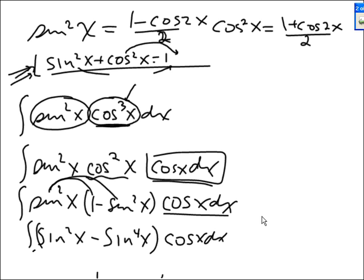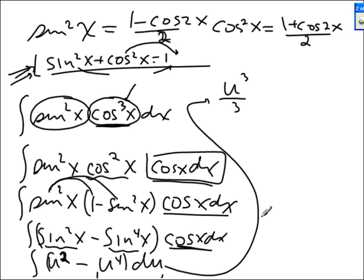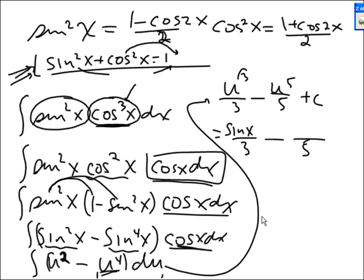That cosine x dx is our du. If that's du, then u must be sine x. We have sine squared x and cosine squared x, but cosine squared x is 1 minus sine squared x. So now I distribute: sine squared x minus sine to the fourth x, times cosine x dx. With u equal to sine x, that's u squared minus u to the fourth, and that's du. The integral gives u cubed over 3 minus u to the fifth over 5, plus c. Substituting back, u is sine x.